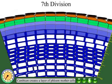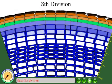The seventh division shows the cambium dividing and forming phloem mother cells, while a layer of outer bark is shed.